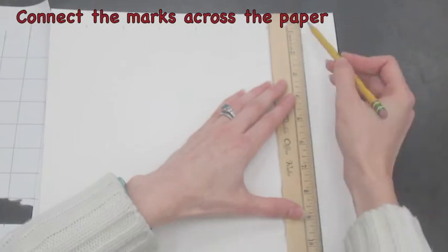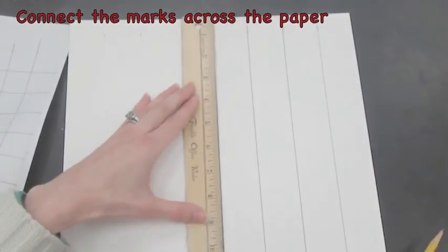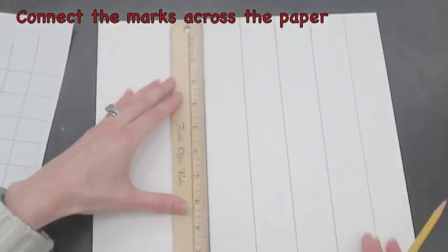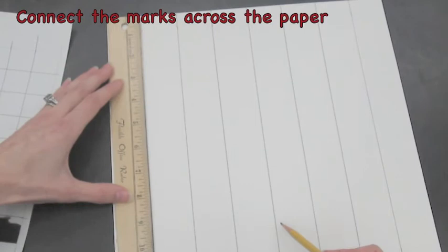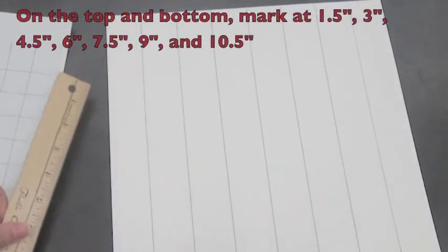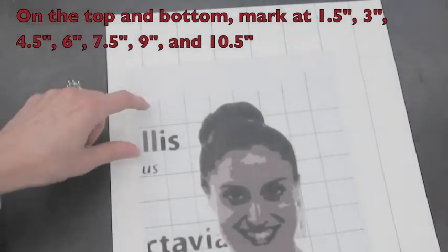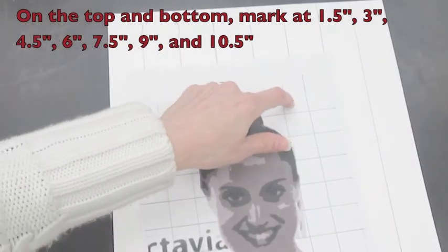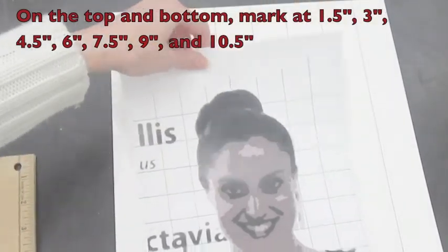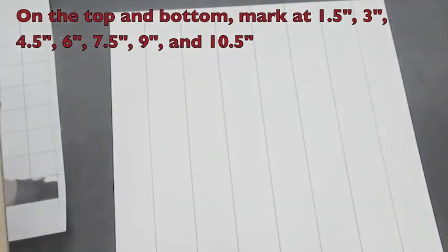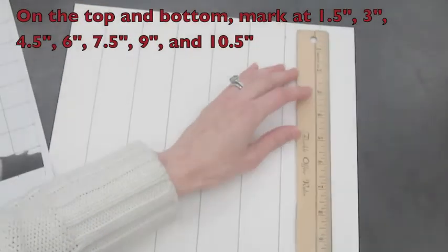Once you have your marks, you can turn your paper or your ruler and connect them lightly across the paper. I would suggest you do this lightly just in case you make a mistake and you need to go back and redraw. Now you can see that we have eight sections, not only on our image, but also on our paper. So even though the sections are larger, because they're the same amount and they'll be the same proportion, they'll be squares, it'll work to enlarge your image.